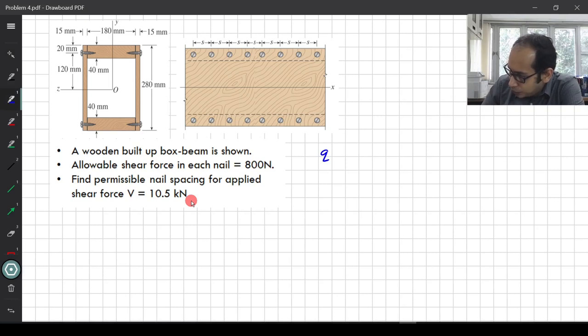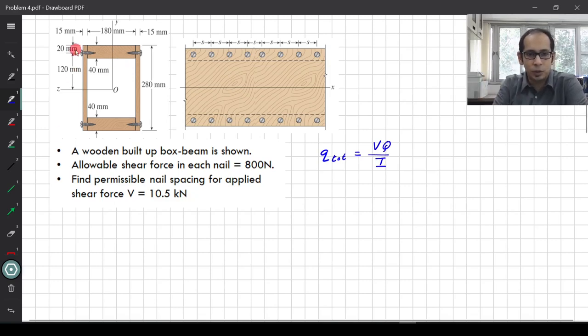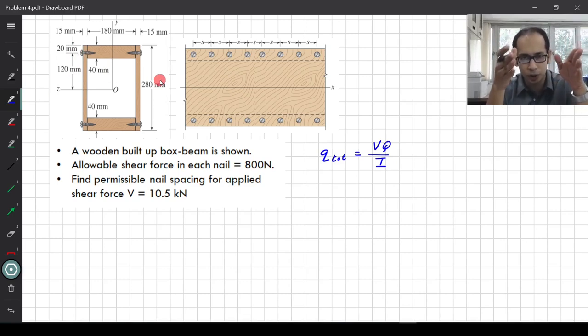I know that Q total equals to V times Q divided by I. This is the total Q which is the resistance. Let us just consider top one over here, the total Q that is total V, the total small Q total. That is the total resisting the total V which is acting over there.